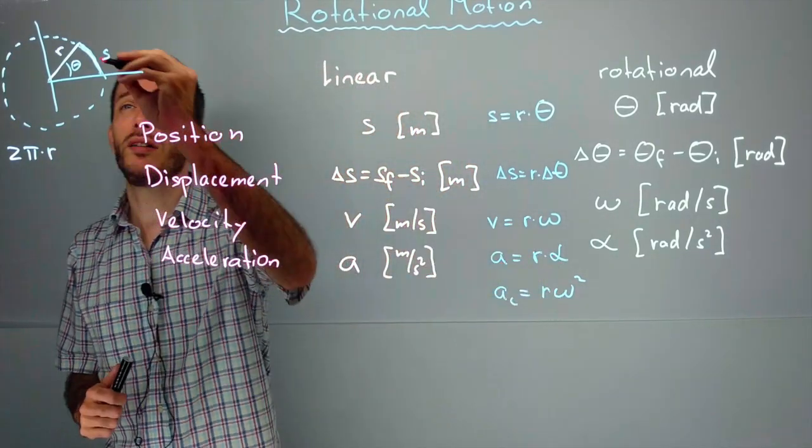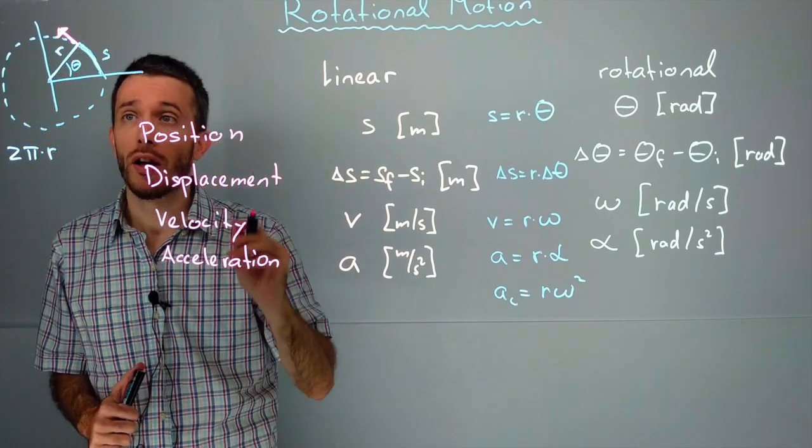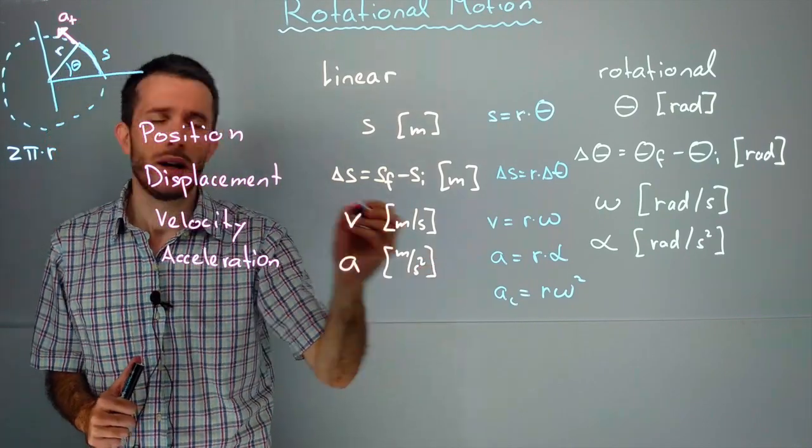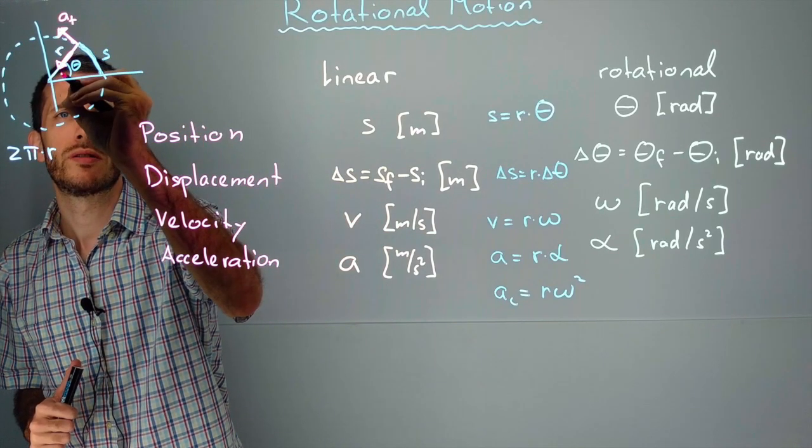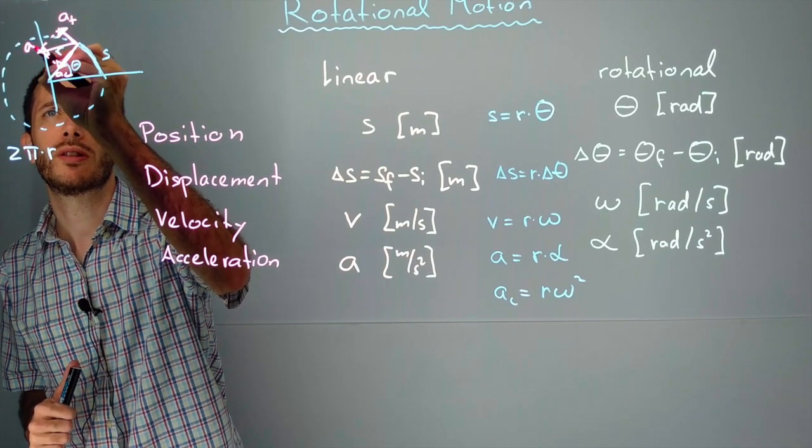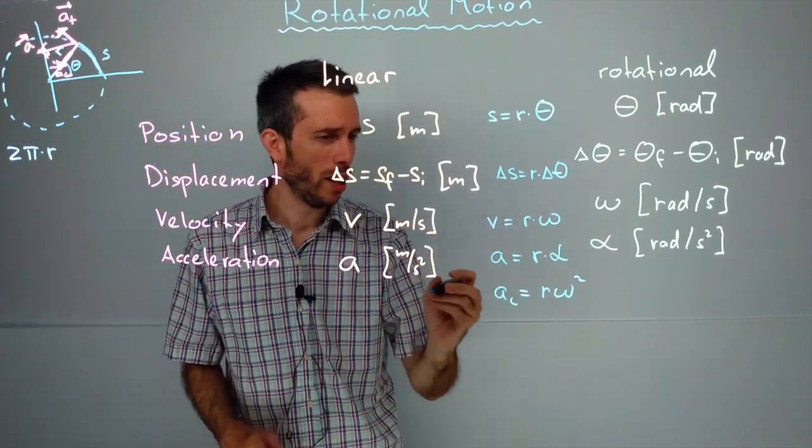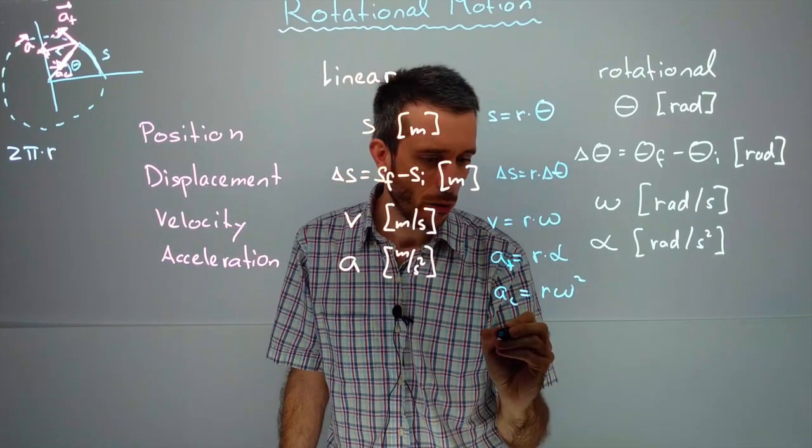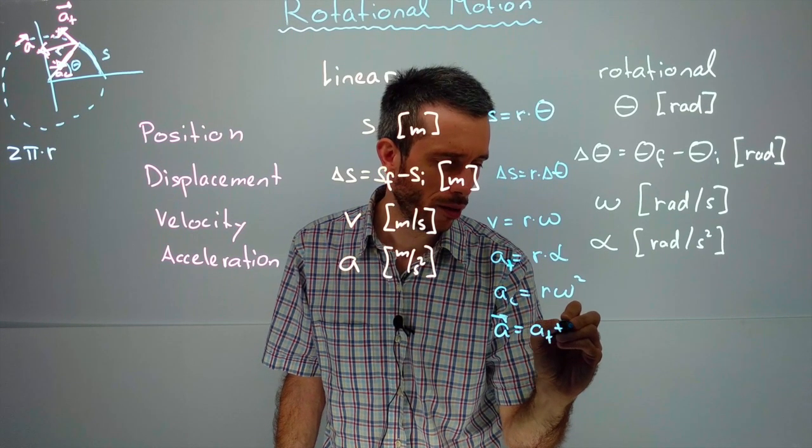My r times alpha is the component of the acceleration that goes along the circle. So this is my a tangential. While the a centripetal is an acceleration that goes towards the center. And then together they actually form my total acceleration. So I have my a tangential and I have my centripetal acceleration, which together will form my total amount of acceleration.